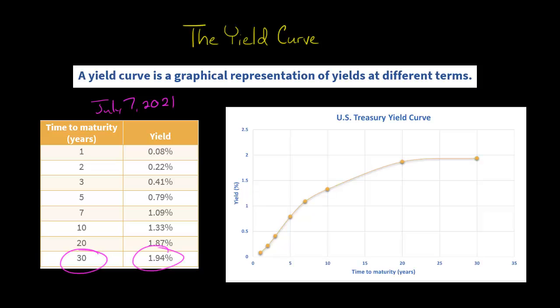The 30-year bond was 1.94%. You'll notice that the yields actually go up as the time to maturity gets higher. That's usually the case, and that explains why we have this upward slope with our yield curve. The yield curve will not always have an upward slope — I'll make a video where we talk about the different shapes — but typically, the longer the maturity, the longer the time horizon, the higher the yield is going to be.